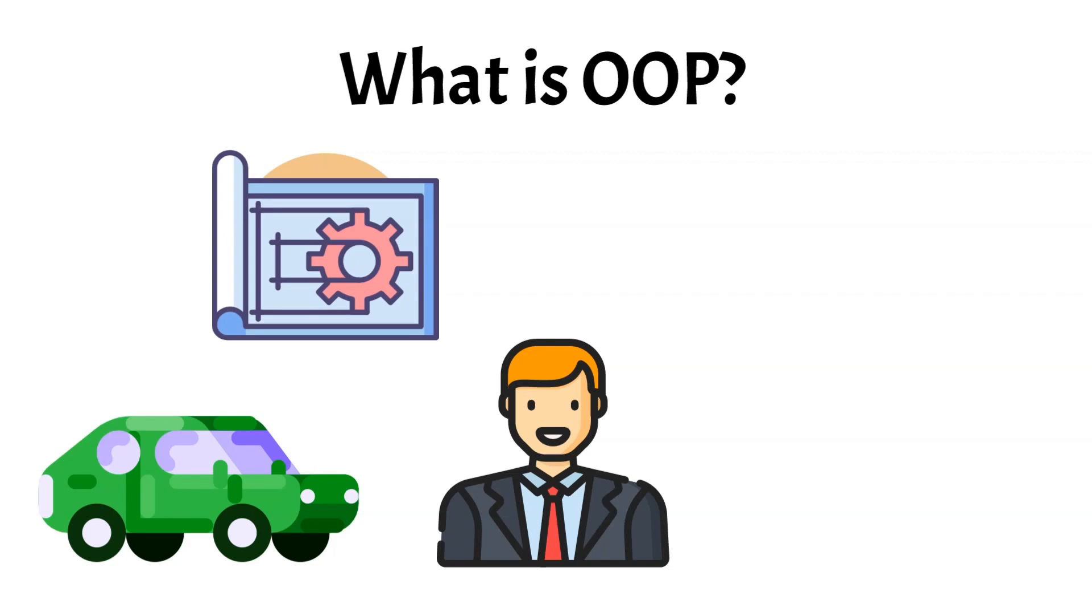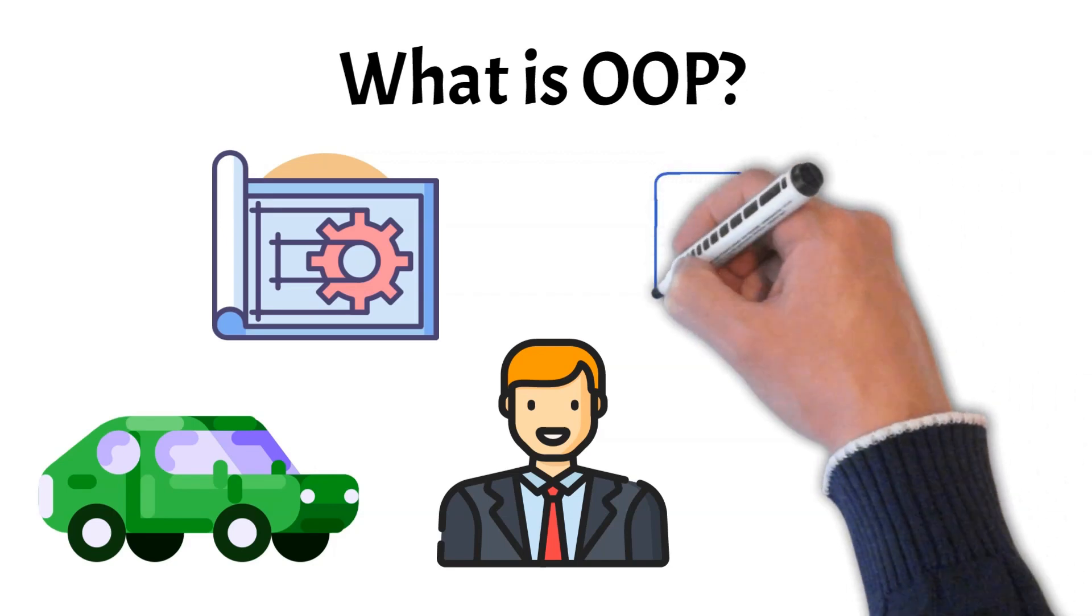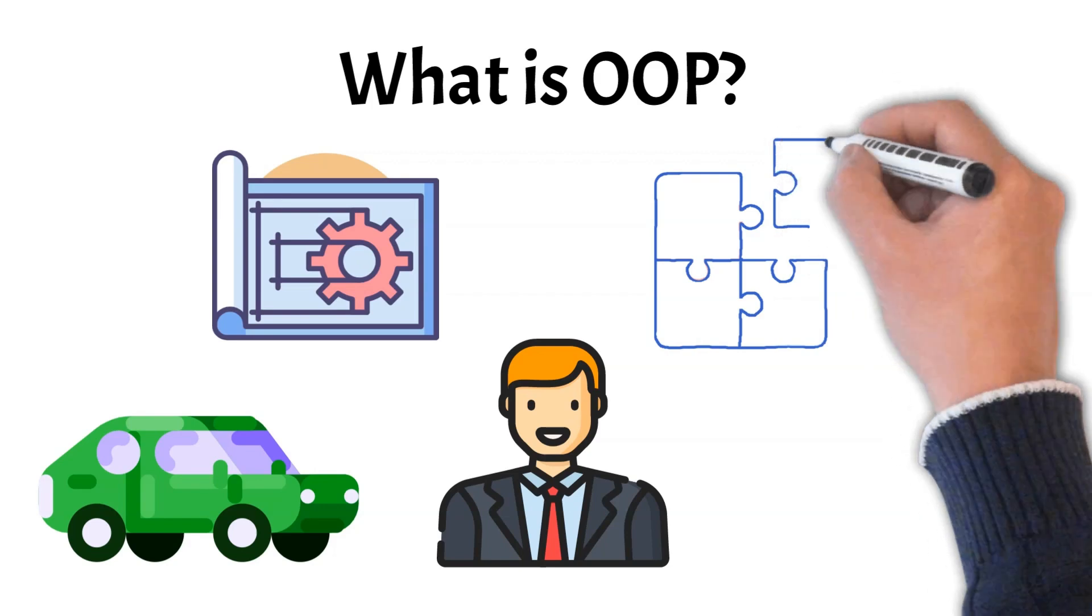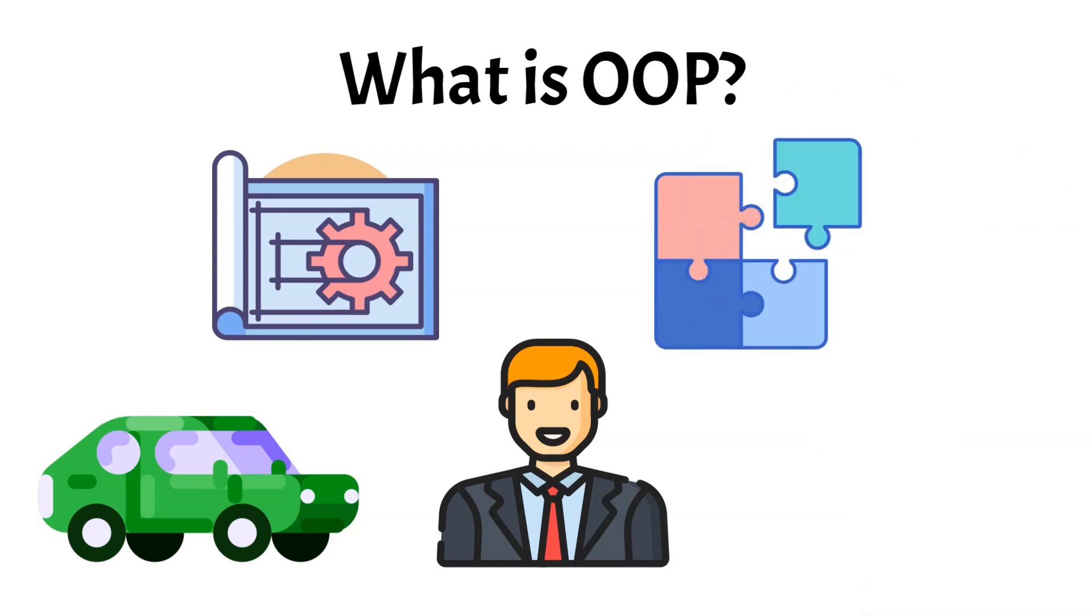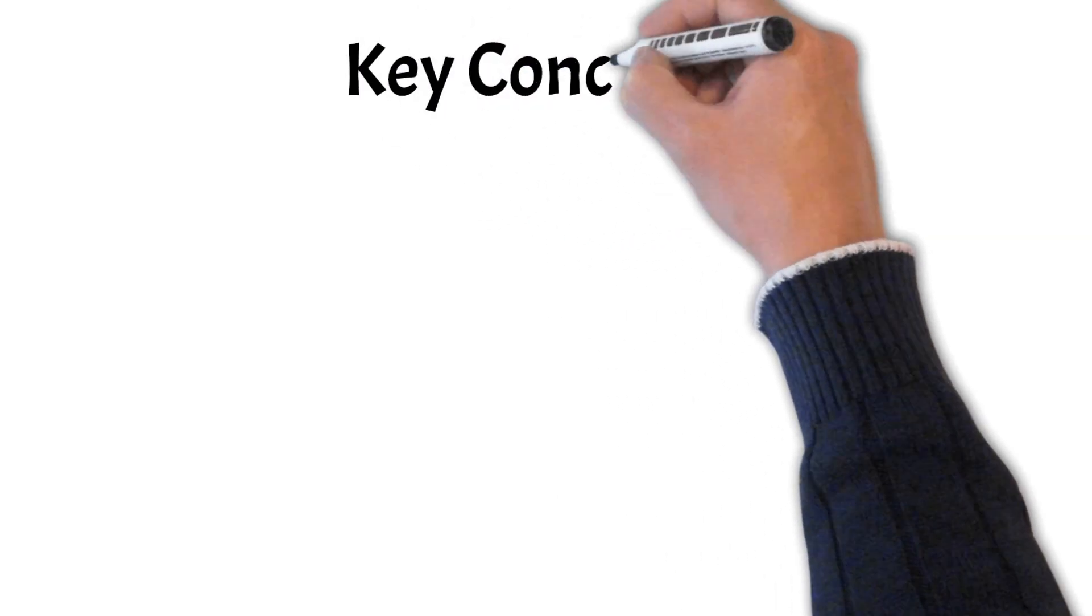OOP makes it easier to build and manage complex software by breaking it down into smaller, reusable pieces. You can think of it as a special way of writing and organizing code that allows for more structure and makes coding a lot easier. Now that we know what OOP is, let's go through its key concepts.